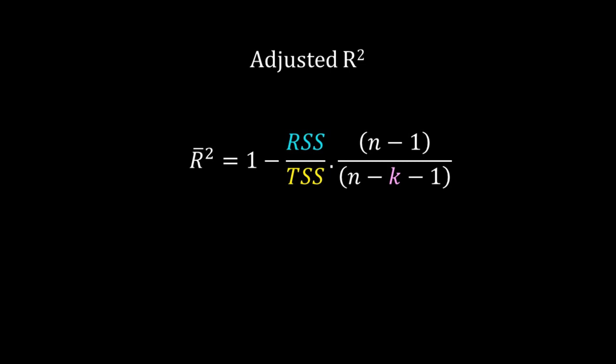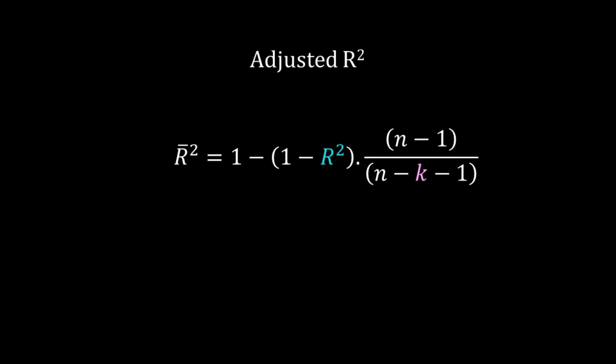We often rearrange terms and write adjusted R squared as 1 minus (1 minus R squared) times n minus 1 divided by n minus k minus 1. Here the R squared on the right hand side is the conventional R squared. So to evaluate a multiple regression model, use the adjusted R squared, not the conventional R squared.